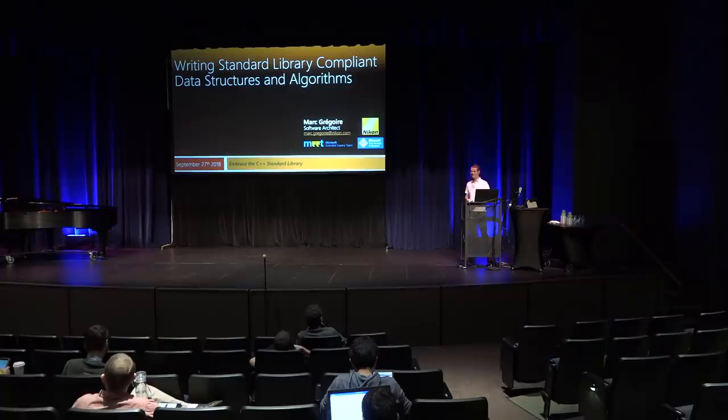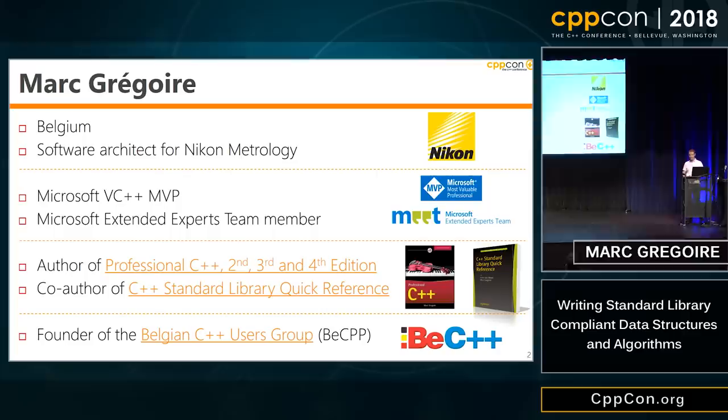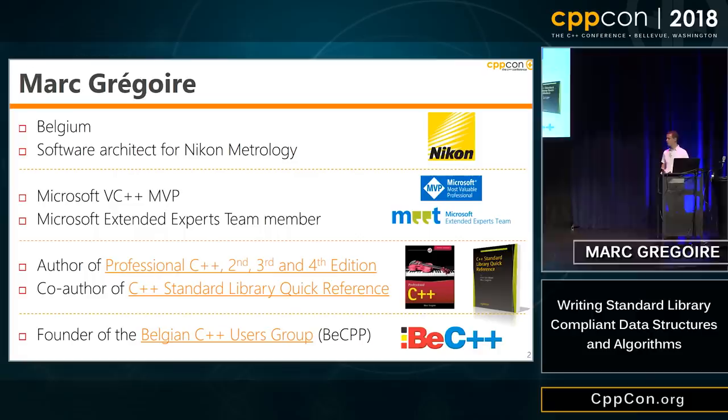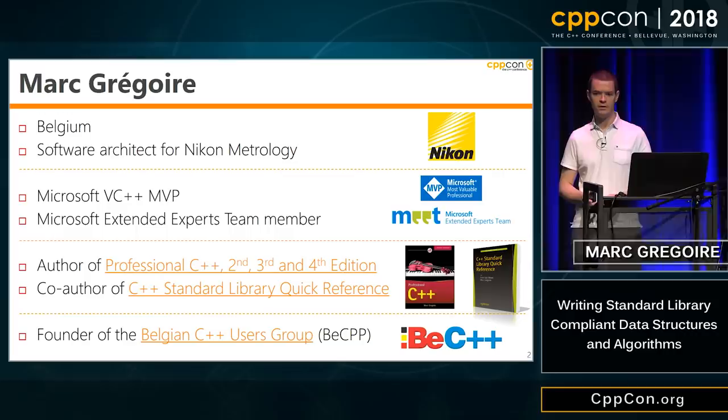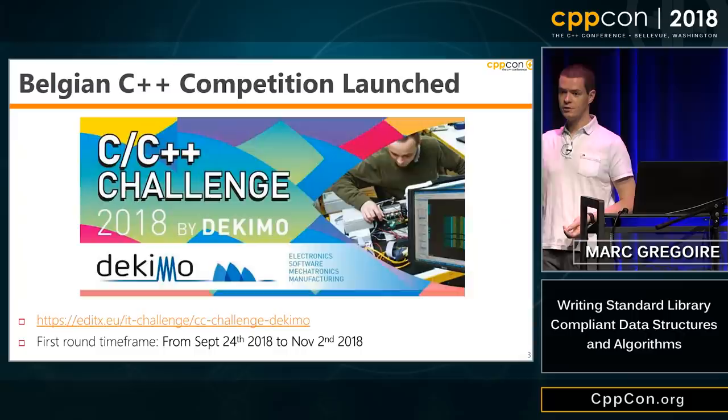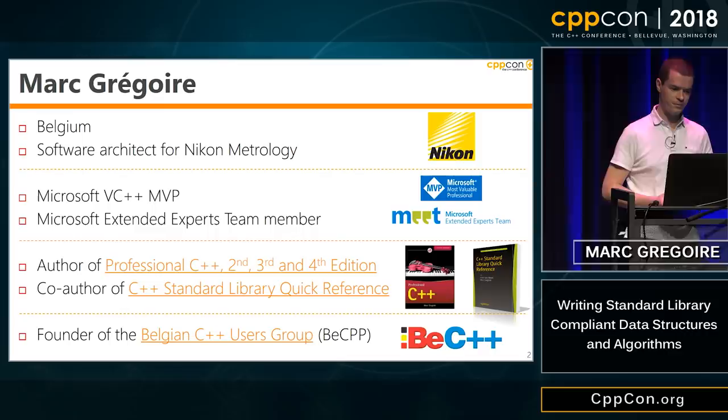I see one and a half hands — not so much. Okay, so let's get started. First, a little bit about myself: I'm a software architect from Belgium, working for Nikon Metrology. I'm a Microsoft Visual C++ MVP and author of Professional C++ 2nd, 3rd, and 4th edition and C++ Standard Library Quick Reference. Both books you can find in the conference book store, so feel free to pass by.